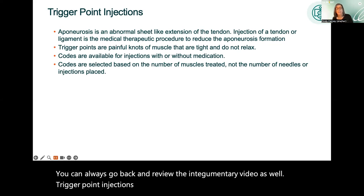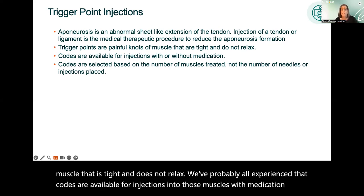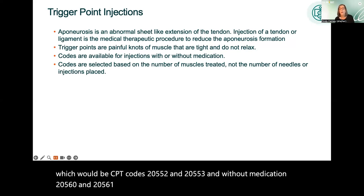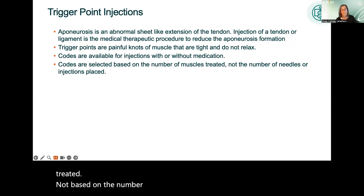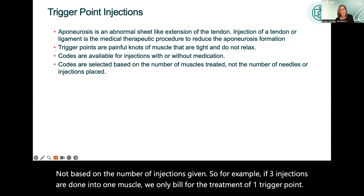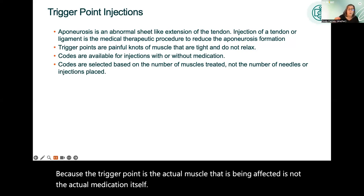Trigger point injections. A trigger point is a painful knot of muscle that is tight and does not relax. Codes are available for injections into those muscles with medication — CPT codes 20552 and 20553 — and without medication — 20560 and 20561. These codes are billed based on the number of muscles treated, not the number of injections given. For example, if three injections are done into one muscle, you only bill for the treatment of one trigger point.